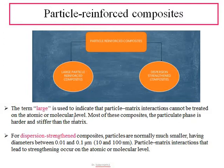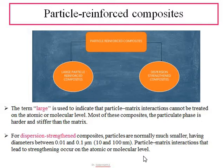For dispersion strengthened composites, the particles are normally much smaller, having diameters between 0.01 to 0.1 micrometers, or 10 to 100 nanometers. These fine particles are widely used for dispersion strengthening, and the particle-matrix interaction can be described at the atomic or molecular level.